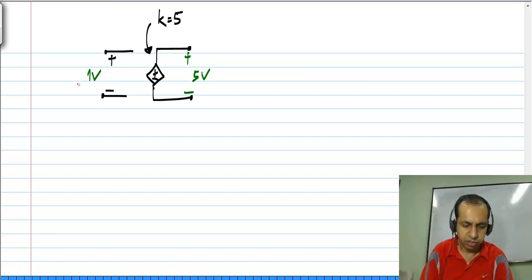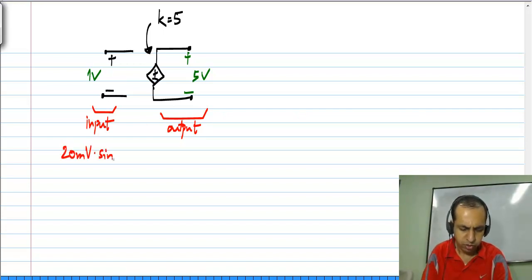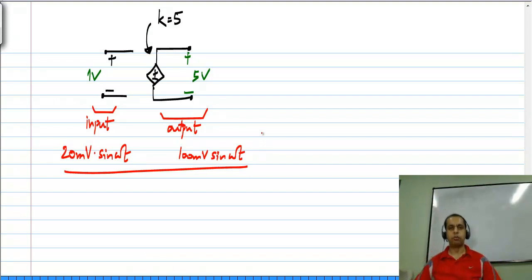Similarly, if I apply an input—you can think of this side as the input and this is the output—if I have, let's say, 20 millivolt sin omega t applied to this side, on this side I will get 5 times that, which is 100 millivolt sin omega t. So voltage controlled voltage source is a sort of an amplifier. In fact, it will be used as a model for an amplifier.